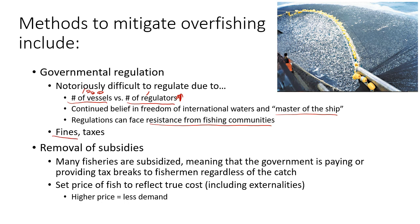You can also fine or tax fishermen for breaking regulations. A big one is to remove subsidies — many fisheries, especially in the EU and the US, are subsidized, meaning your tax dollars pay fishermen to go out and fish regardless of what they catch. If they don't reach their quota, the government makes up the difference. We need to stop paying people to fish just for the sake of fishing and harvesting young fish that aren't reaching market quota.